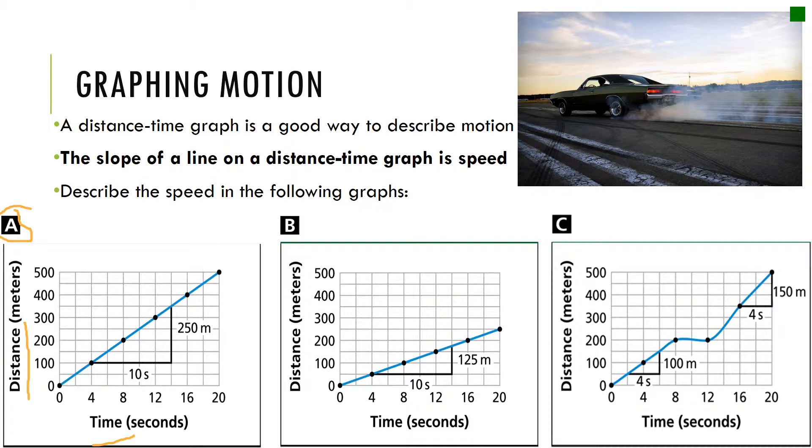Check out graph B. I can already tell without doing any math that this speed is not as great because the slope is not as steep. Graph B, the object's moving slower than graph A. We could figure out our speed the same way by dividing 125 meters by 10 seconds. This object would be moving 12 meters per second, about half as fast as graph A.